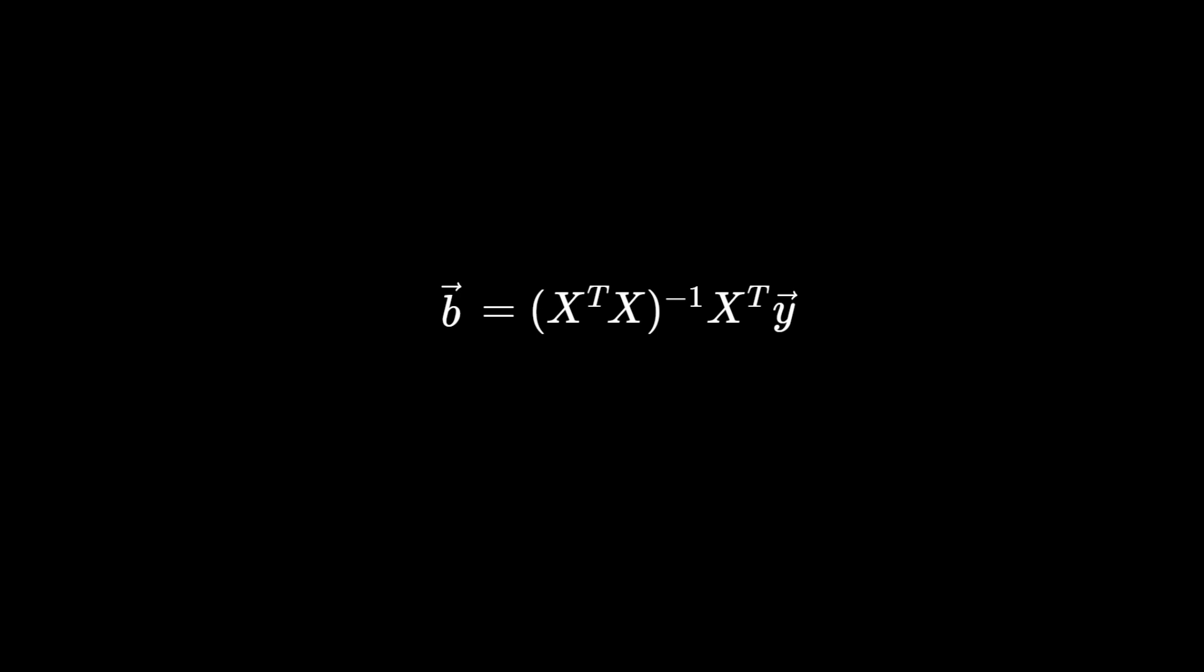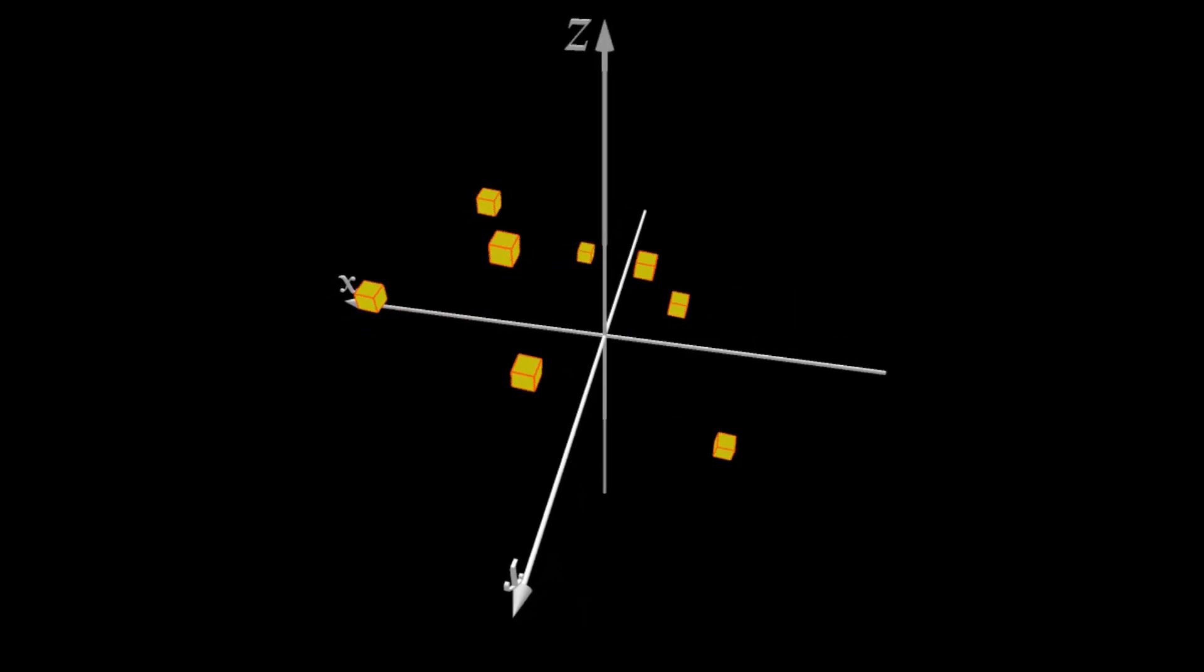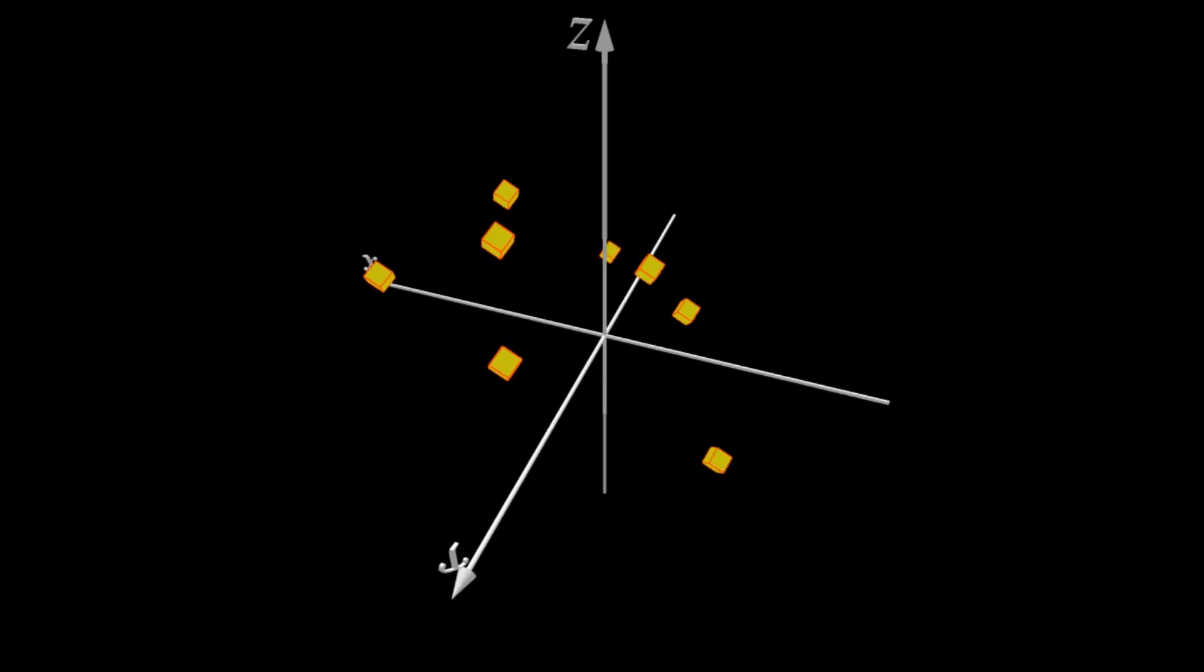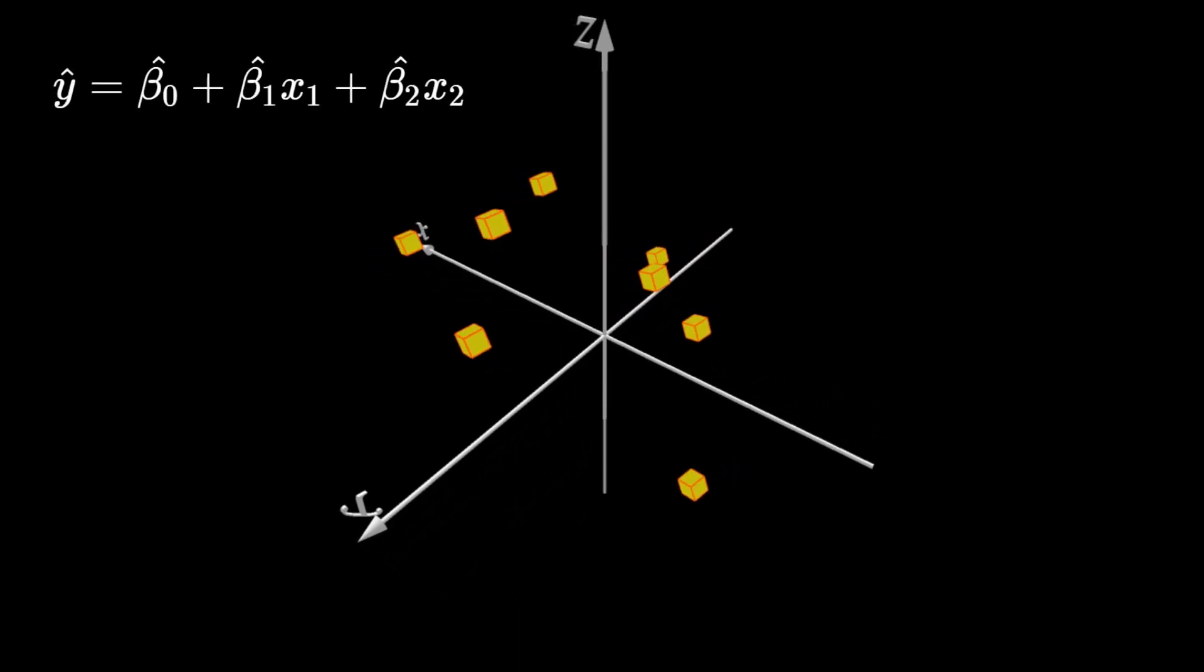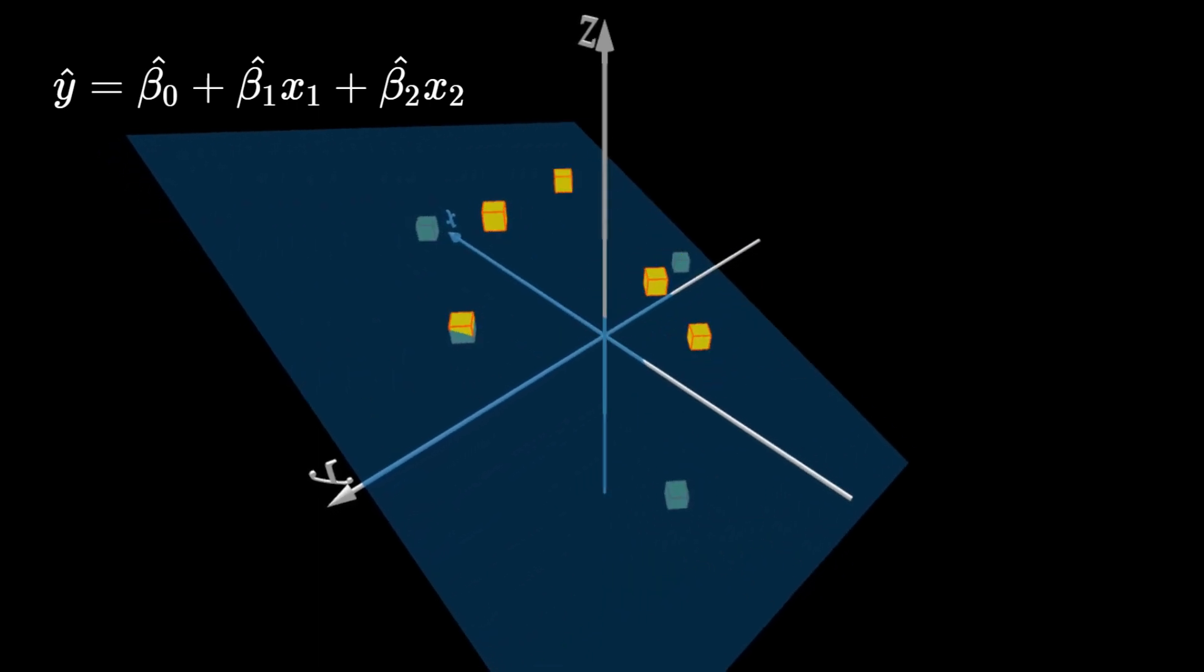In this case, after we solve for the coefficient vector, we can visualize the three coefficients by plotting all of the data points in 3D space and their linear relationship as the best fit plane for all of the points.